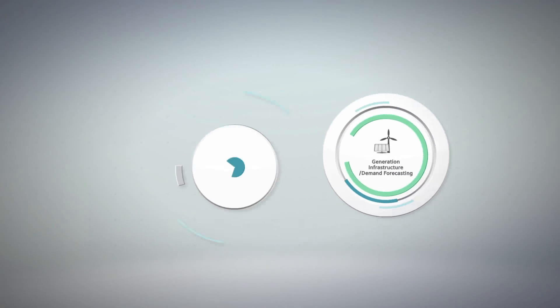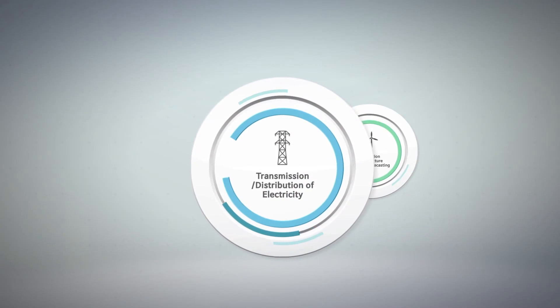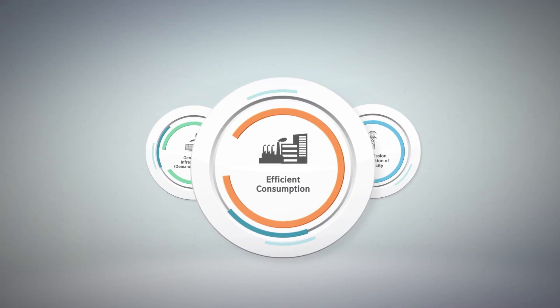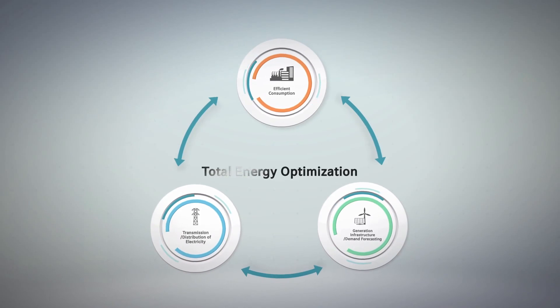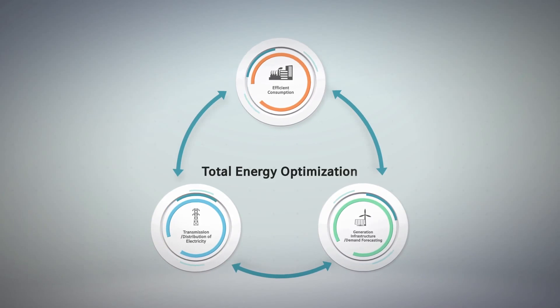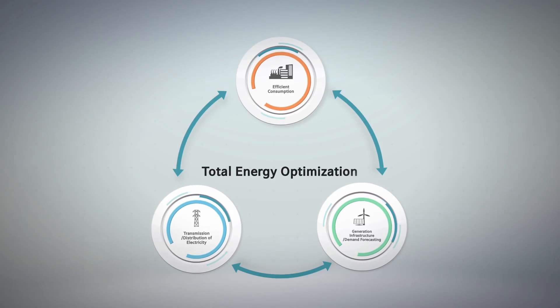POSCO ICT connects the whole energy circulation, including generation demand, transmission distribution, and consumption, with one value chain and carries out total energy optimization business that supports energy optimization.